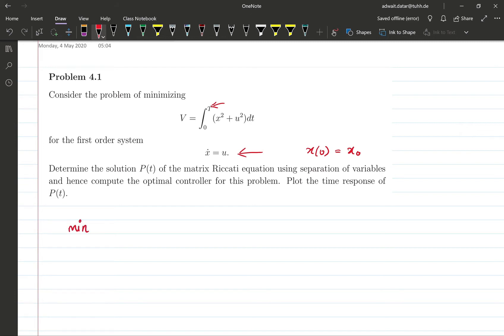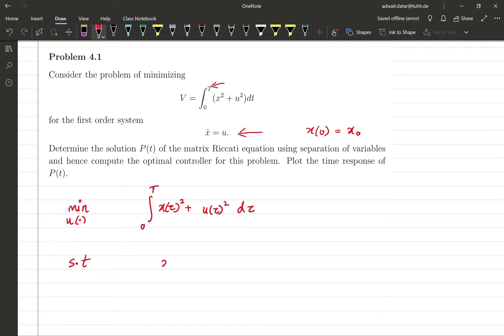Let's write down first the optimization problem explicitly. We are looking for the best possible input trajectory u(·), the whole trajectory from 0 to T, a function that minimizes this cost subject to these constraints. So that is the complete optimization problem.